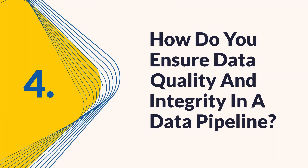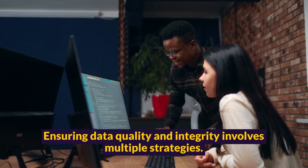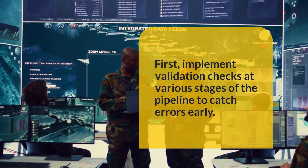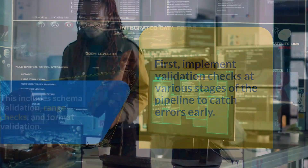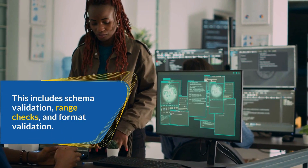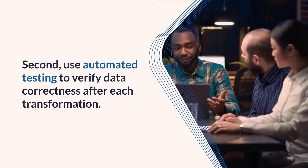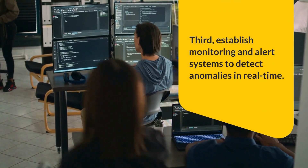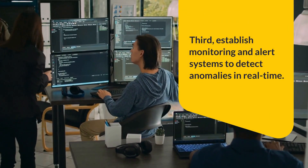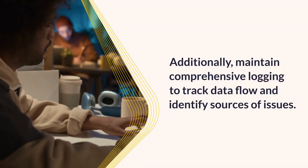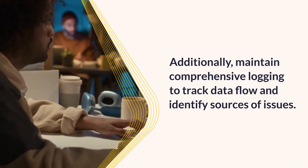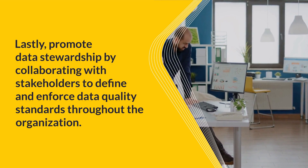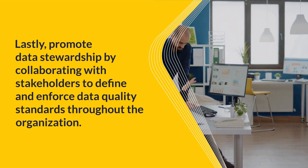Question 4: How do you ensure data quality and integrity in a data pipeline? Ensuring data quality and integrity involves multiple strategies. First, implement validation checks at various stages of the pipeline to catch errors early — this includes schema validation, range checks, and format validation. Second, use automated testing to verify data correctness after each transformation. Third, establish monitoring and alert systems to detect anomalies in real-time. Additionally, maintain comprehensive logging to track data flow and identify sources of issues. Lastly, promote data stewardship by collaborating with stakeholders to define and enforce data quality standards throughout the organization.